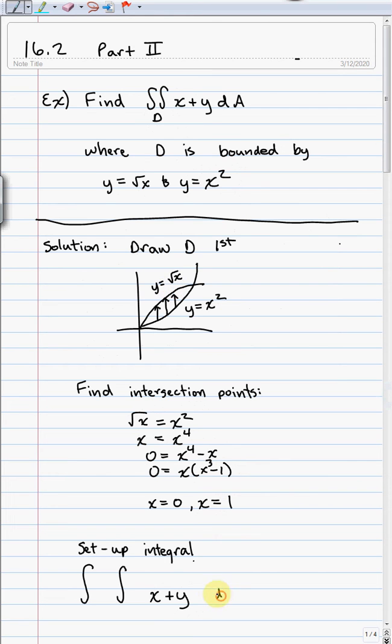Okay. So I do dy first, the inner integral, then y is going to start down at x squared, y is equal to x squared. Again, you can write y is equal to x squared, or just write x squared, it doesn't really matter. And then, we're going to go up from y is equal to x squared, to y is equal to the square root of x. And again, you don't have to write y is equal to, you can just write square root of x.